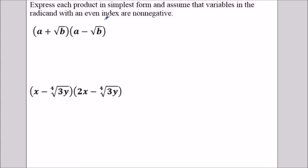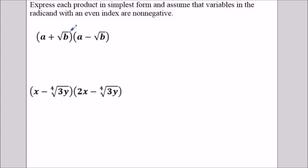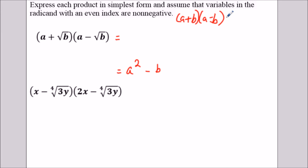Now for the next questions, we have more products to deal with. What's special about these two is these are what we call conjugate terms. The shortcut would just be to say the first term squared — a times a is a squared — minus radical b times negative radical b, which is just b. So as you master the concepts of algebra, these questions can become easier.